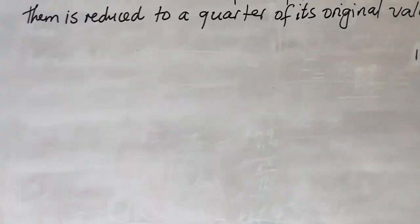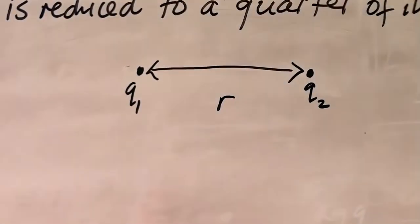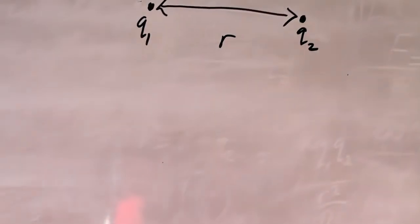Okay so here we have two charges. Let's say this charge here and this charge over there. We'll call this charge q1 and this q2, and they've got a distance that we can call r that's separating them. Now they're saying if we reduce the distance between these two charges, what's going to happen?